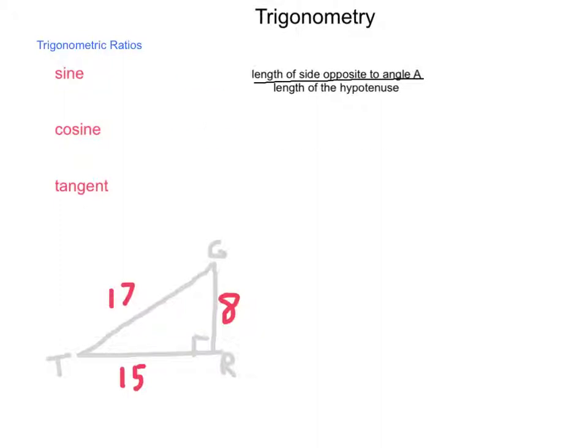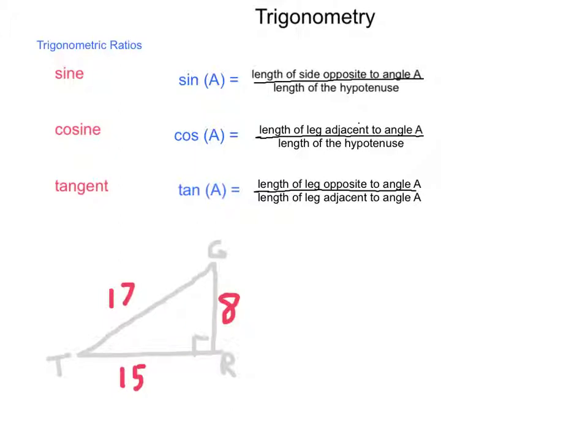For the cosine function, we have the length of the leg adjacent to angle A divided by the length of the hypotenuse. For the tangent function, we are looking at the length of the leg opposite angle A divided by the length of the leg adjacent to angle A. Adjacent means next to; opposite, of course, we've worked with our straight across.